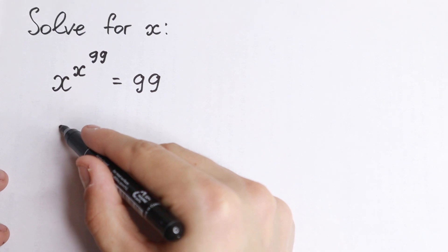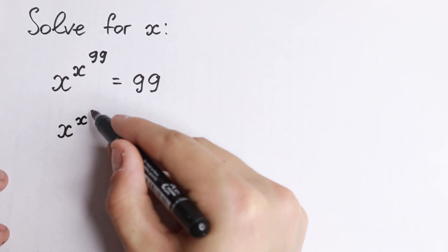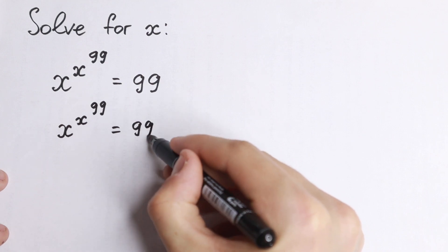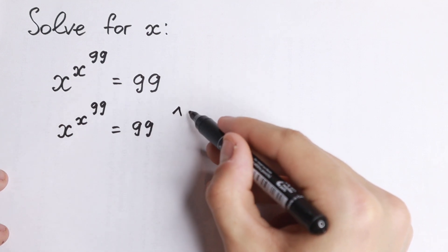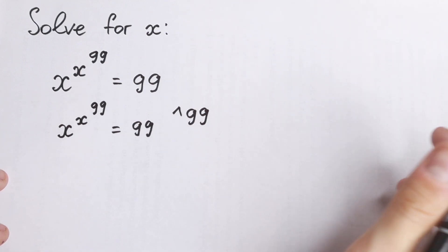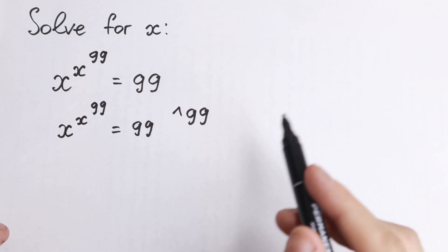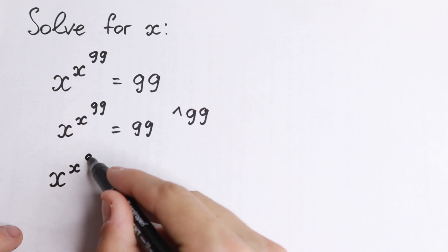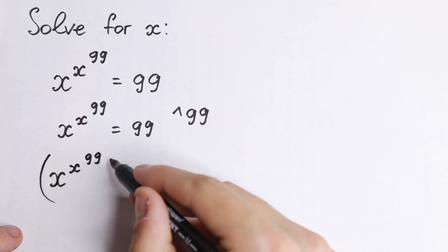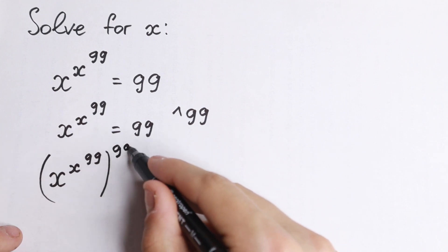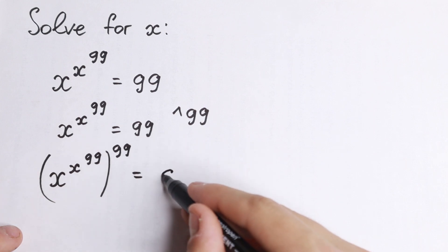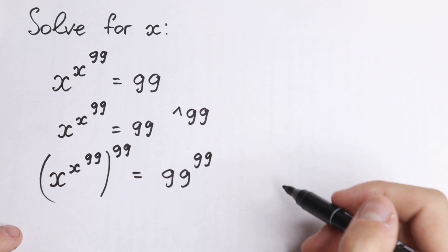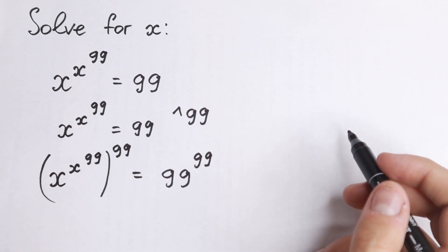Firstly, we raise both sides to the power 99. So we have x to the power x to the power 99 equal to 99, and we raise both sides to the power 99. On the left hand side, x to the power x to the power 99, all raised to the power 99. And on the right hand side, we have 99 to the power 99.